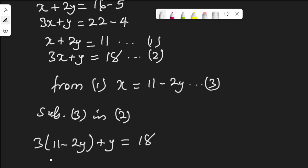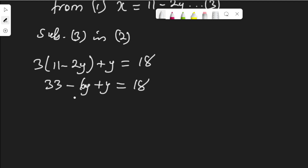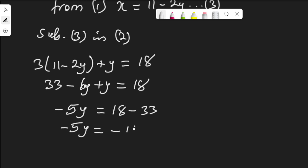3 multiplied by 11 is 33, and 3 multiplied by 2y is 6y, so we have 33 minus 6y plus y equals 18. Collecting like terms: negative 6y plus y is negative 5y, so negative 5y equals 18 minus 33, which is negative 15. Dividing both sides by negative 5, y equals negative 15 divided by negative 5, which is 3.